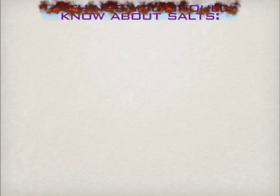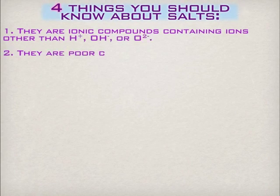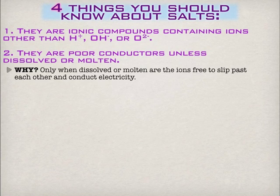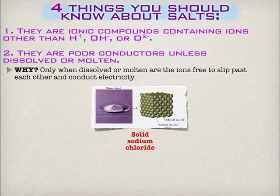Four things you should know about salts. They are ionic compounds — they tend not to include things like H+, OH- (called hydroxide), or peroxide, and we'll learn about the names of those when we get to naming ionic compounds. They tend to be very poor conductors unless they're molten or dissolved. In that case, the ions are free to move around, and if the ions are free to move around, they can essentially push a charge through a solution.